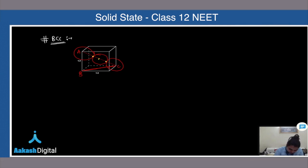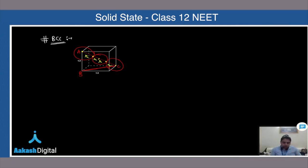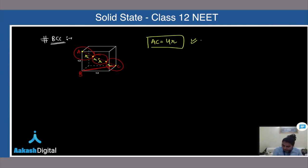The distances marked from the particle centers to the edges are all r. From the diagram, AC equals 4r, since it passes through two corner particles and the body-center particle.